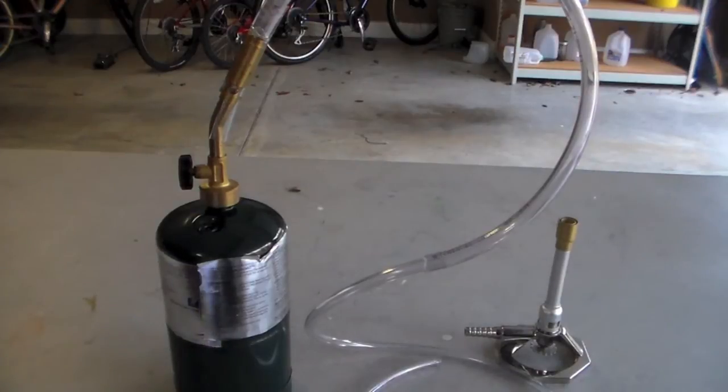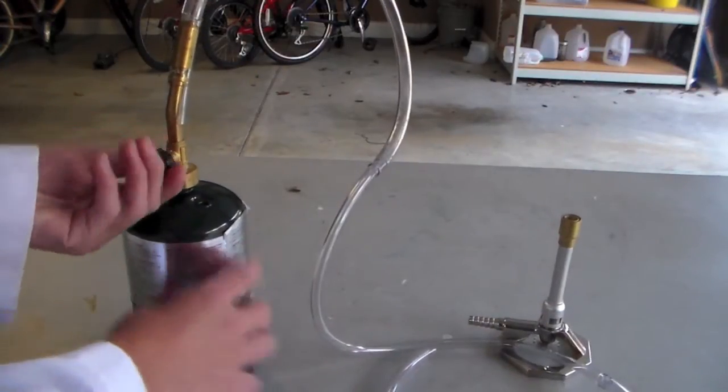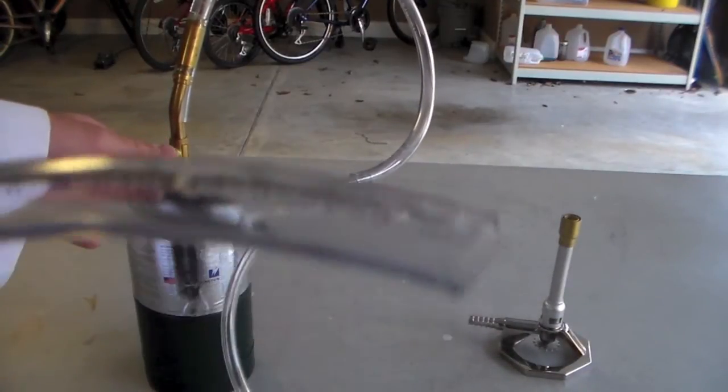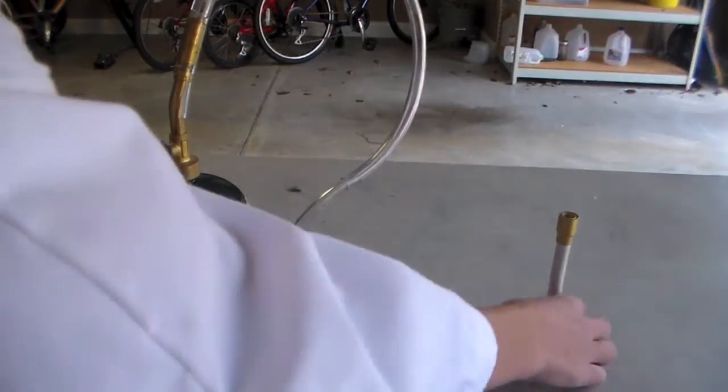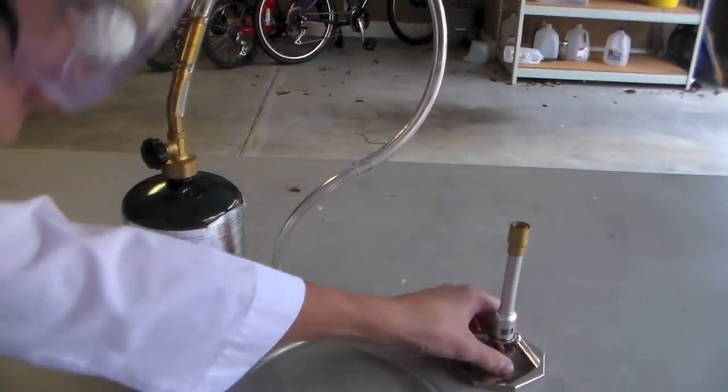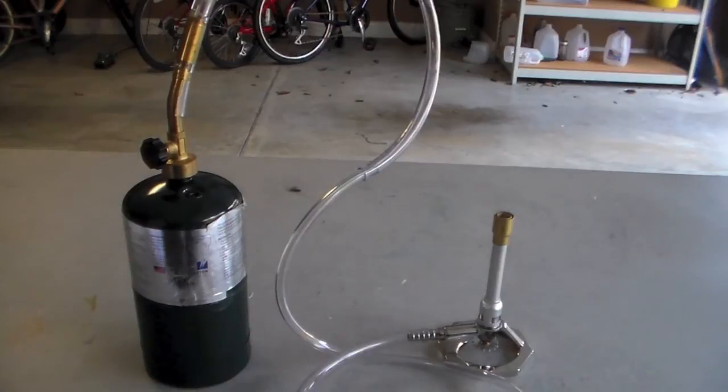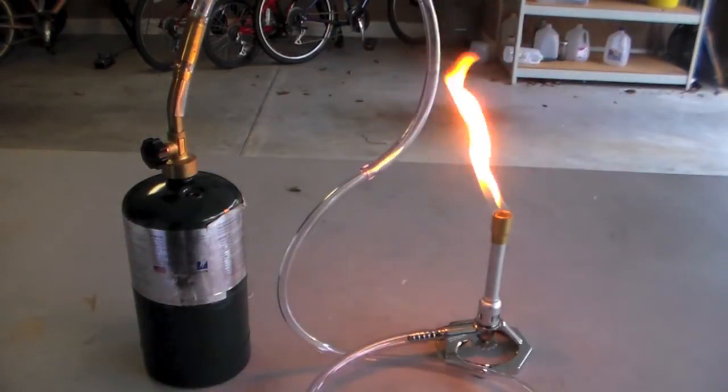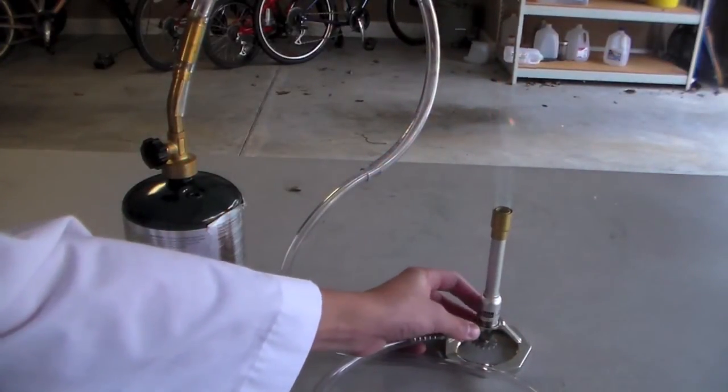Alright, so time to show this in action. So I'm going to turn on the gas and I'm just going to hold it up so you can hear the gas coming out. Now I'm going to connect it to the burner and set everything and light it with the flint striker. And you can see it lights right up and it can be adjusted just like a normal burner.